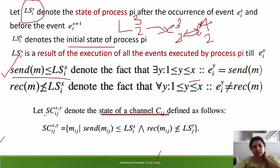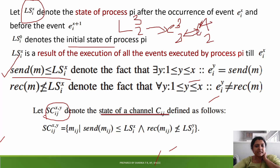The local state is now denoted formally. The state of a channel is also defined. The channel state Mij represents messages in transit between process i and process j — from local state LSix to local state LSjy. The channel state is determined by send and receive events.